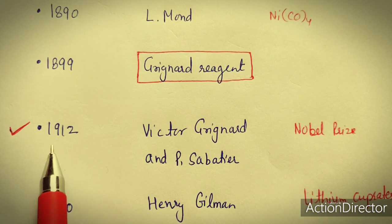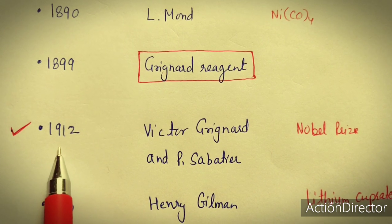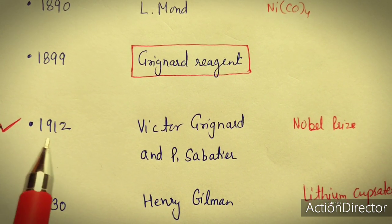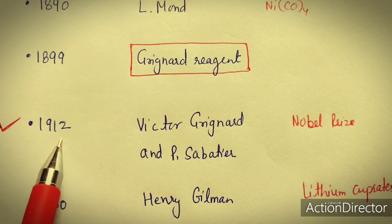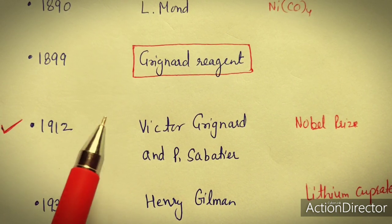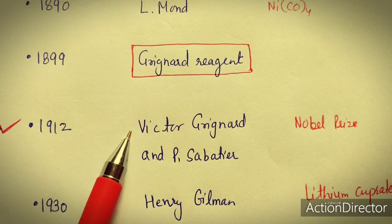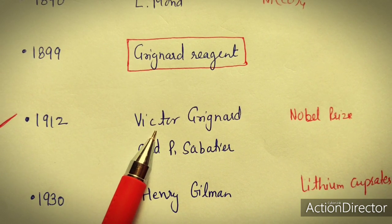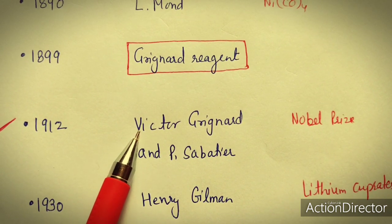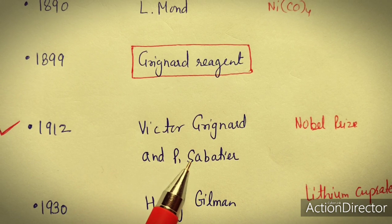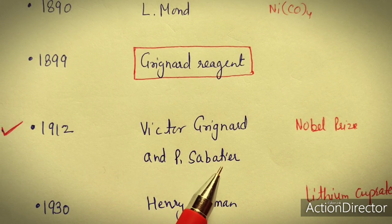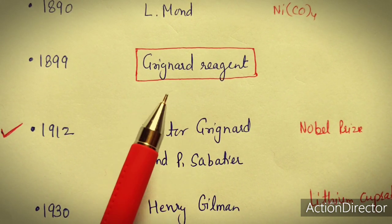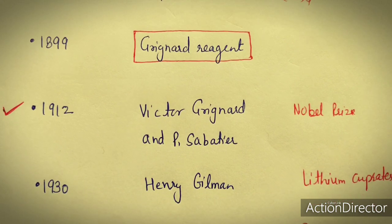There are a number of Nobel prizes in organometallic compound research. In 1912, the first Nobel prize in organometallics was awarded. Victor Grignard and P. Sabatier obtained this Nobel prize for the Grignard reagent.